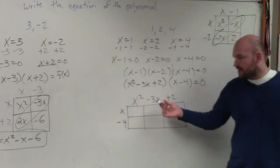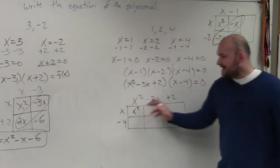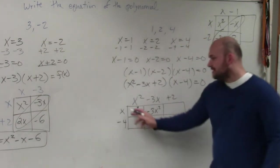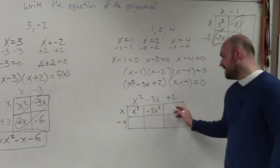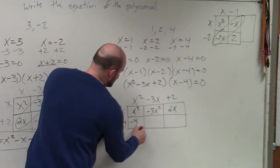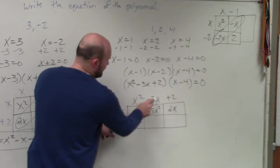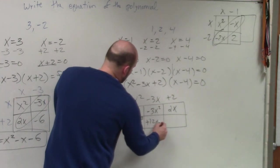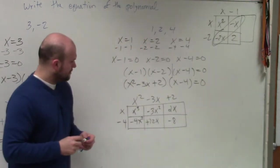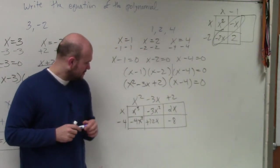Now you do the same thing. Find the area of every box. x times x squared is x cubed. x times negative 3x is negative 3x squared. x times 2 is 2x. Negative 4 times x squared is negative 4x squared. Negative 4 times negative 3x is positive 12x. And negative 4 times 2 is negative 8.